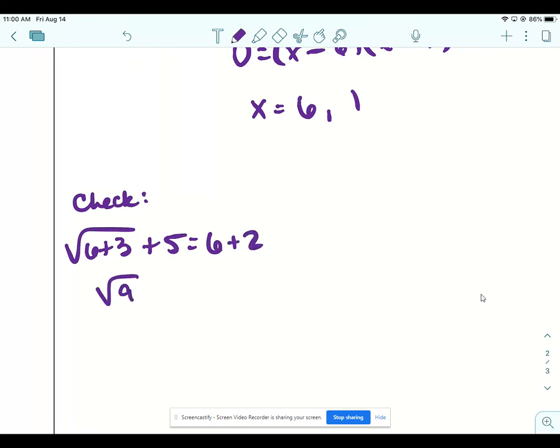All right, so we get the square root of 9 plus 5 equals 8. So that's true. 3 plus 5 equals 8. So 6, we're good.